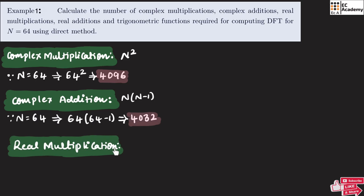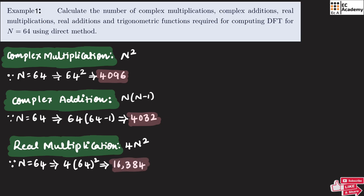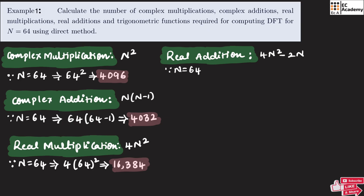Now let us find the real multiplication, which is given as 4n². Since n equals 64, we get 4 × 64² = 16384. So 16384 real multiplications are needed for the 64-point DFT. To find real additions, we use the formula 4n² − 2n. Since n equals 64, we get 4 × 64² − 2 × 64 = 16256, so the number of real additions needed is 16256.